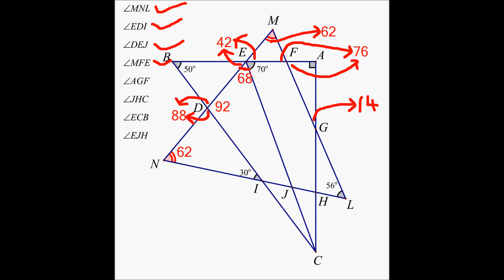So angle AGF is another one I found. The next one is angle JHC. If this angle is 14, this has to be 14 as well because they are vertical angles. This angle will turn out to be 180 minus 14 minus 56. If you add 14 to 56 you get 70, and from 180 minus 70 you get 110. So this has to be 110.